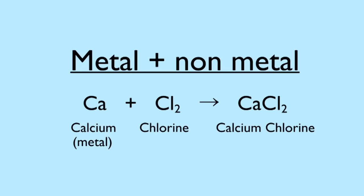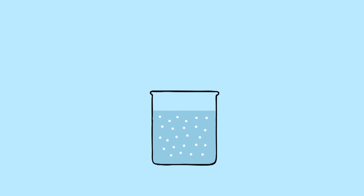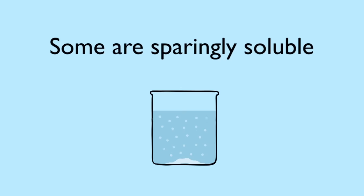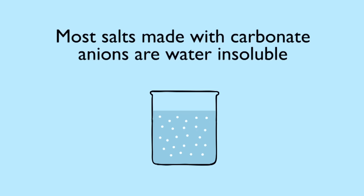All of these salts are soluble in water, but some salts are highly insoluble and some are what we call sparingly soluble, meaning only a small amount can dissolve and the rest stays as crystals. Salts made with sodium, potassium and ammonium cations, and those made with nitrate anions are all water soluble. But most salts made with carbonate anions are water insoluble.